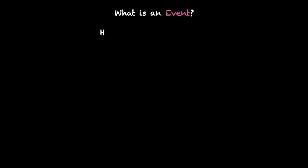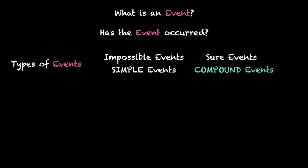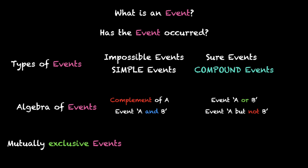Now let's summarize. This is what we learned in this video: we talked about what an event is, how do we know whether an event has occurred or not, different types of events — impossible and sure, simple and compound — and we also looked at the algebra of events: complement of an event, event A or B, A and B, A but not B, and finally what mutually exclusive events and exhaustive events mean.